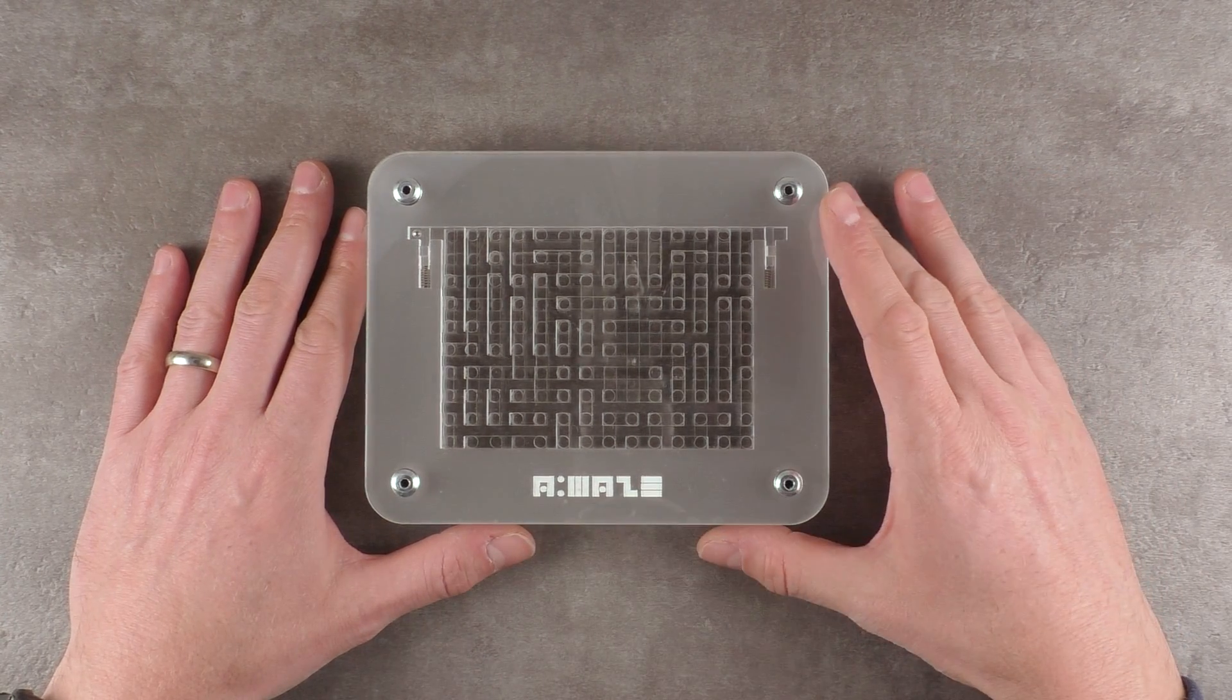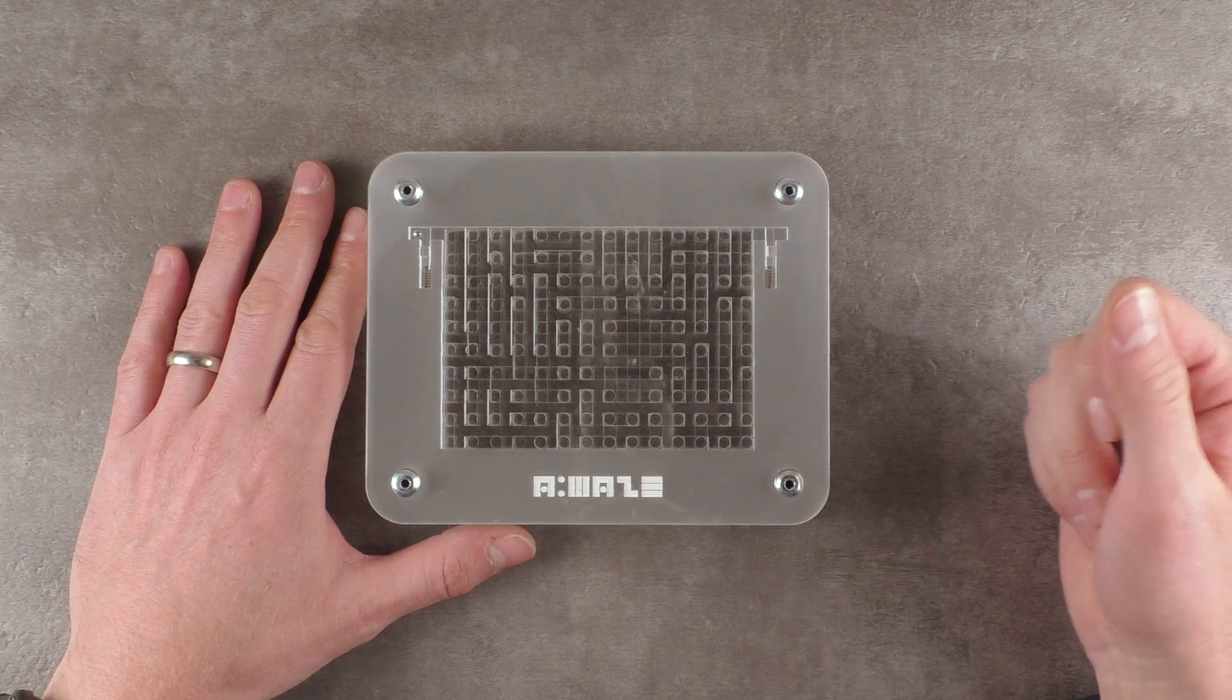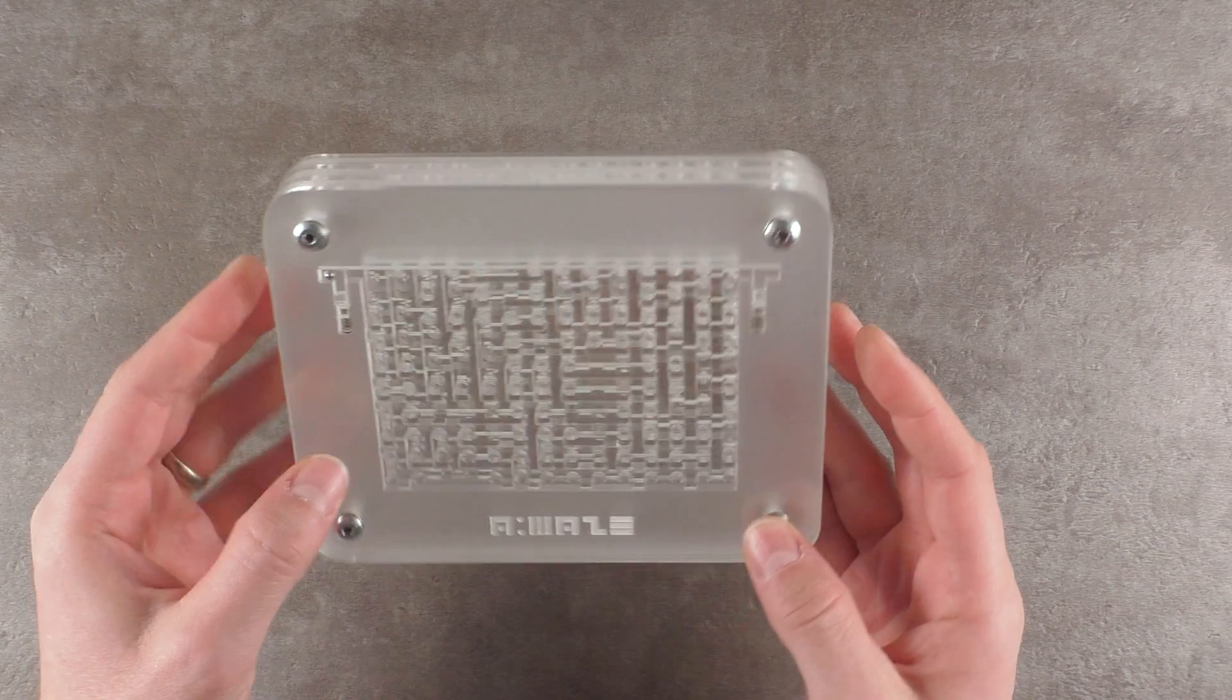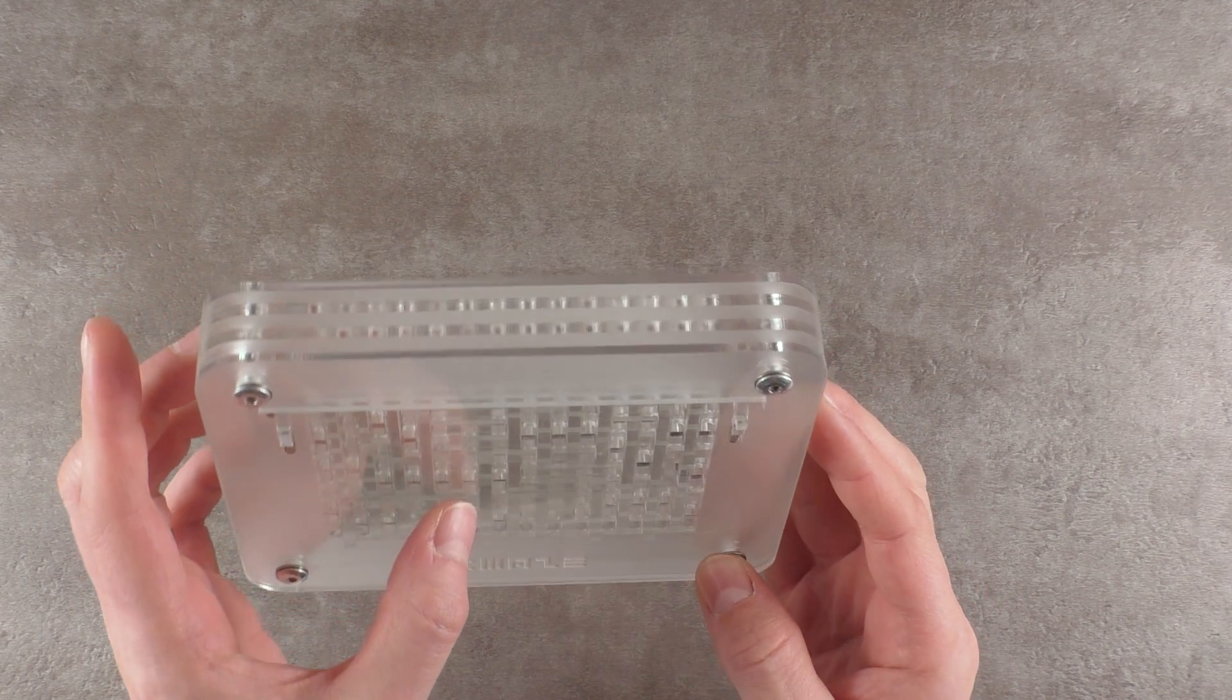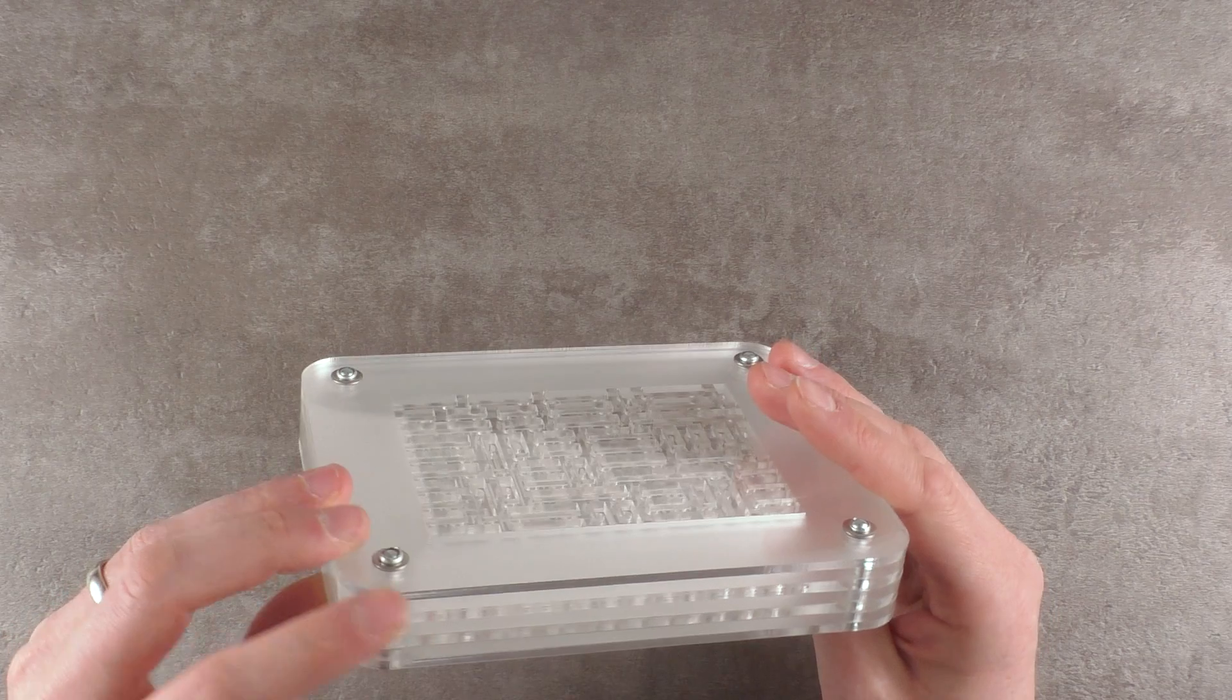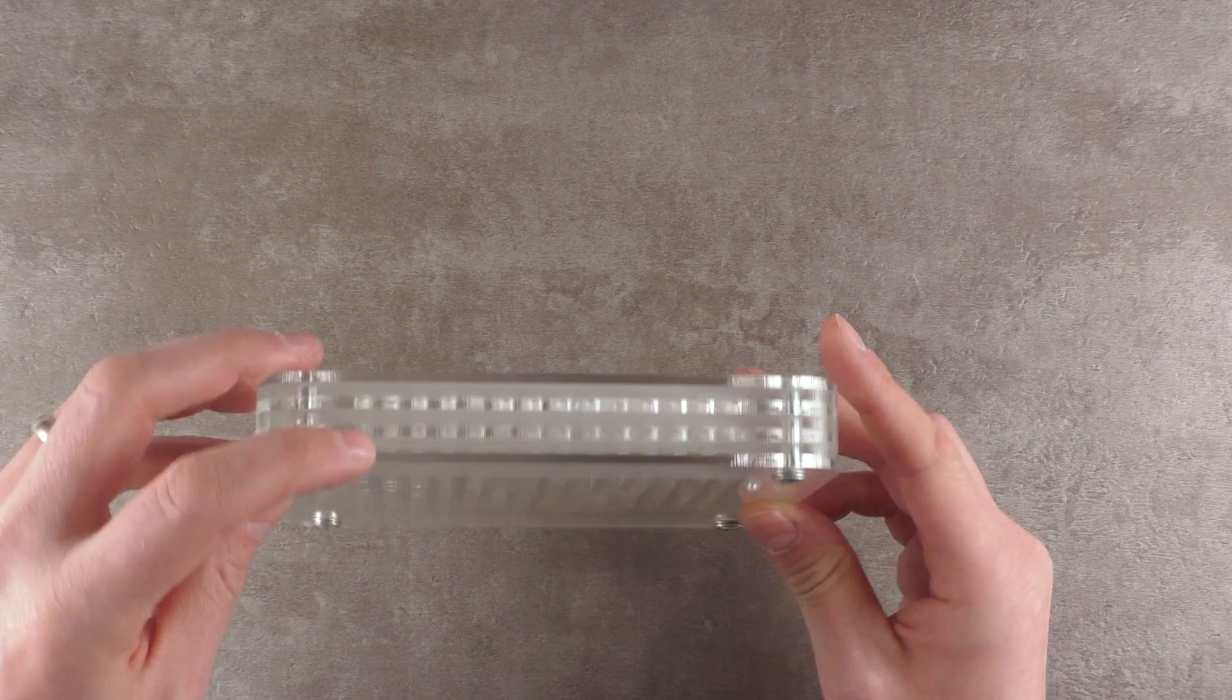But today is about the second puzzle, a maze puzzle called A Maze, probably after Abhishek Maze or Amazing, I don't know. And it's a multi-layer maze puzzle with, if I see it right, one, two, three, four, five layers in between here. And probably like three layers that include a maze.